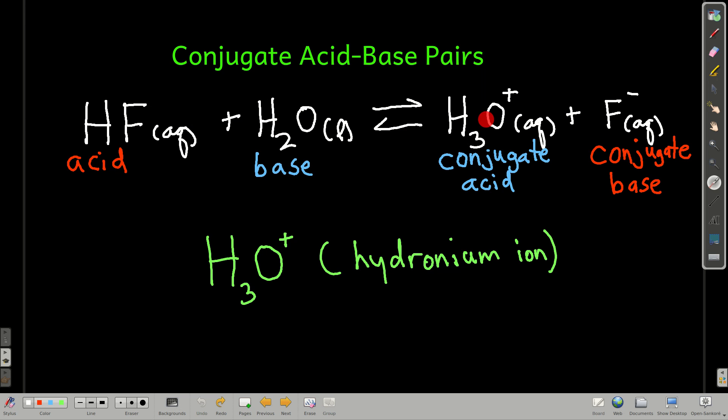But if we look at the equilibrium going the other way, what's going to happen here is the hydronium ion will donate a proton to the fluoride ion, which will accept that proton, making hydronium ion an acid going this way and fluoride base going this way. Well, there's a relationship between the base on the left-hand side of the arrows and its conjugate acid on the right-hand side.